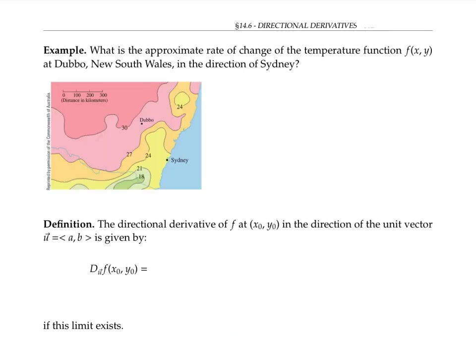In this figure, lines of equal temperature are drawn on this map of Australia. The distances on the map are given by this scale. Let's assume that these temperatures are given in degrees Celsius, so the temperature at Dubbo is somewhere between 30 and 27 degrees Celsius, maybe about 28 degrees.